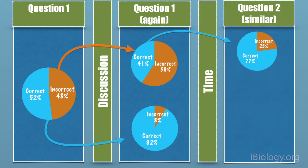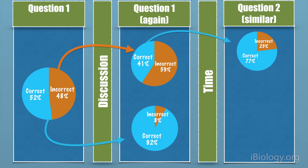And then if you look at the isomorphic question, the people who changed their mind as a result of discussion got 77% correct on the isomorphic question. And the people who stayed with their incorrect answer only got 44% correct.